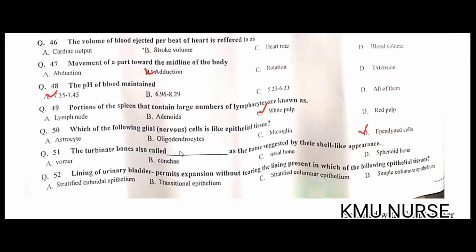The non-glial cell that resembles an epithelial cell is the ependymal cell — D is the correct option. The turbinate bones are called conchae, a name suggested by their shell-like appearance — B is the correct answer.